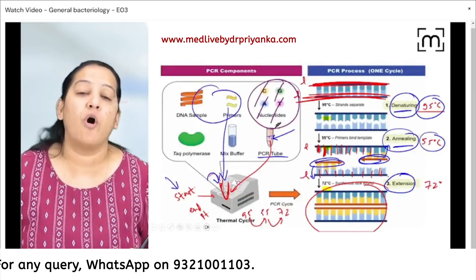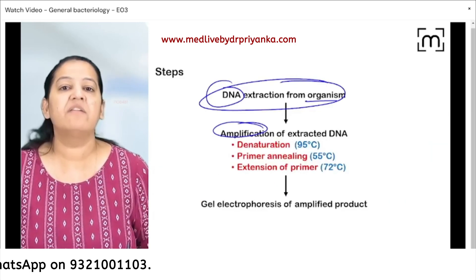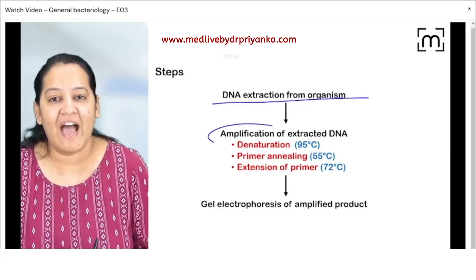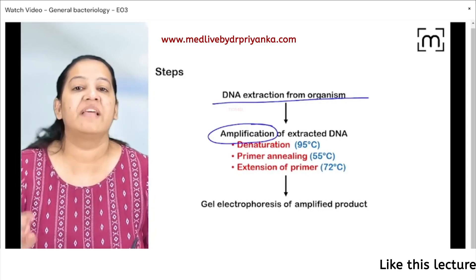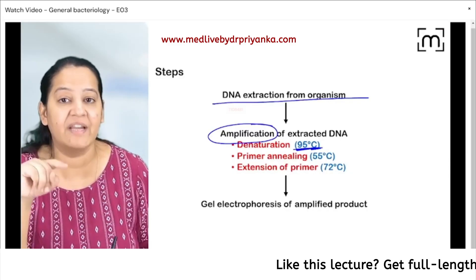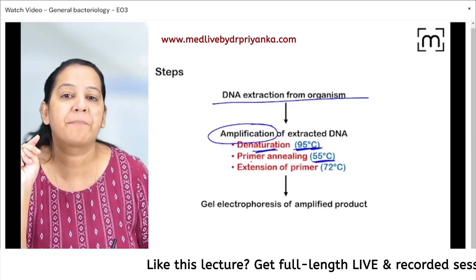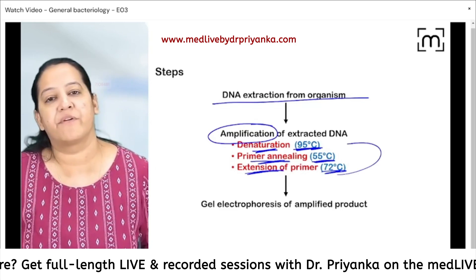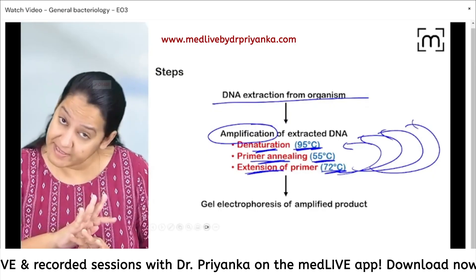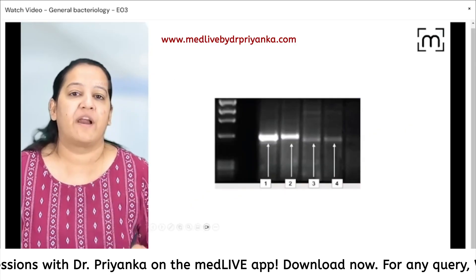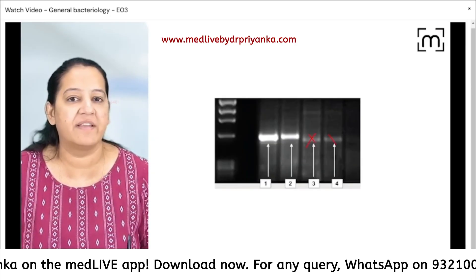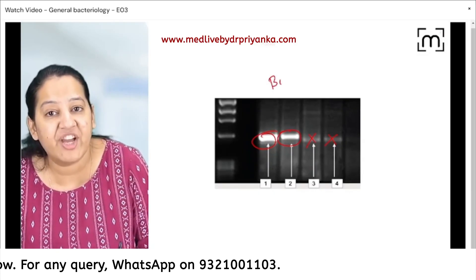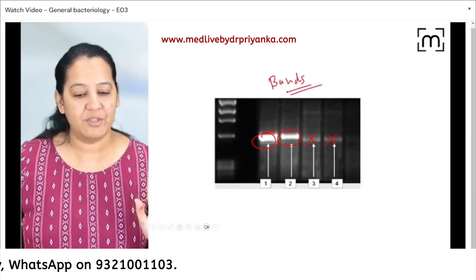These are the three steps of amplification. First, we extracted DNA from the organism and placed it in a PCR tube. Then amplification was done using three repeated steps: denaturation at 95°C, annealing at 55°C, and extension at 72°C. When the end point is reached, we do gel electrophoresis to see which gene is amplified. On the gel, clear amplification bands are visible — you can see which samples are amplified and which are not.